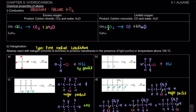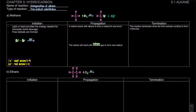In reality, each of the hydrogen can be substituted. But for our syllabus, we're going to learn mono substitution where we will be replacing only one hydrogen. So let's look at your notes on page 7. The name of the reaction is halogenation of alkane and the type of reaction is free radical substitution.